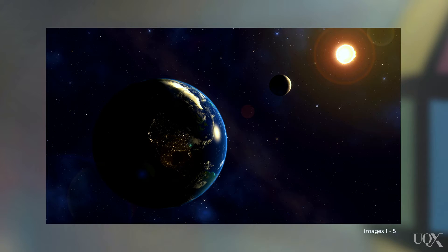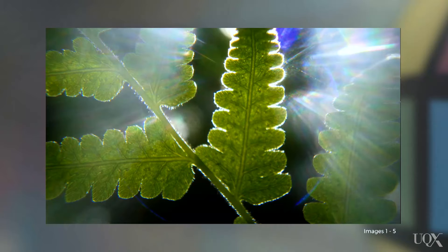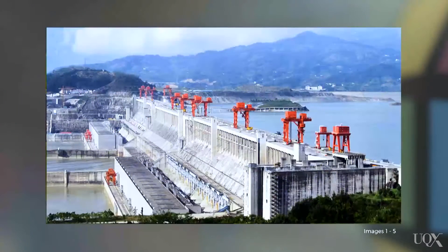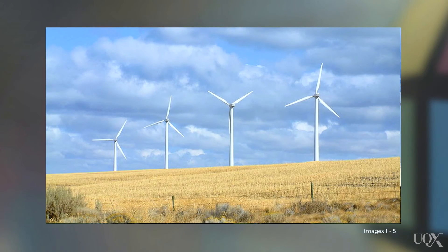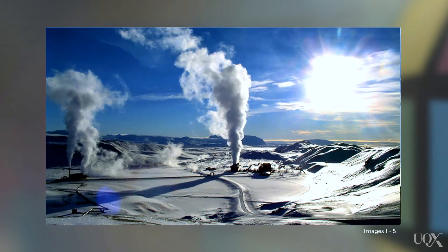It turns out energy gets converted into numerous other forms. Plants harness sunlight through photosynthesis and can be used either directly or in fossilized form. Our motion around the sun due to gravitational forces creates hydroelectric, tidal, and wind energy. The energy stored in Earth's crust from the origins of our planet gets released through nuclear power or geothermal energy.